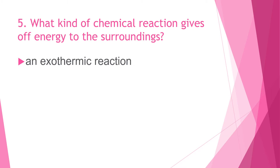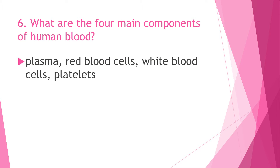Question 5: What kind of chemical reaction gives off energy to the surroundings? The answer is an exothermic reaction. Question 6: What are the four main components of human blood? Plasma, red blood cells, white blood cells, and platelets compose blood.